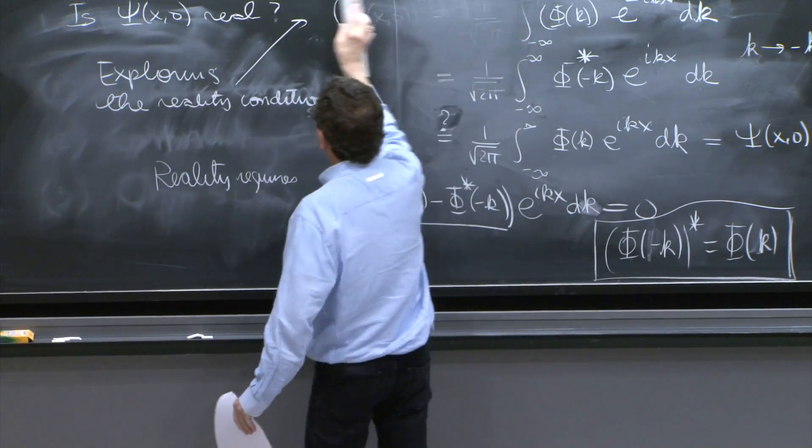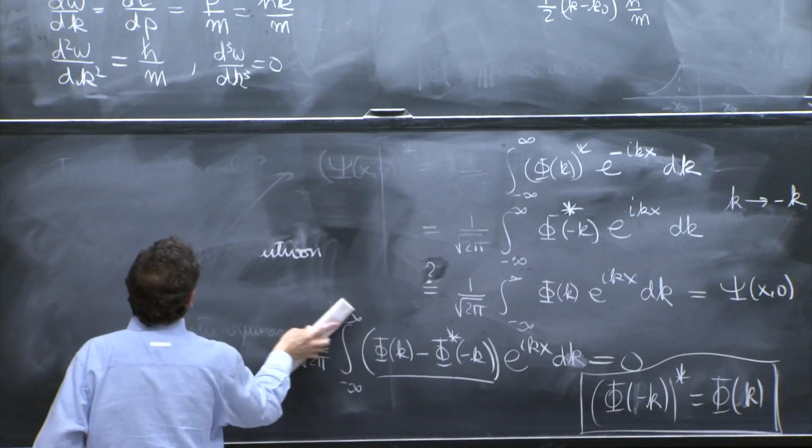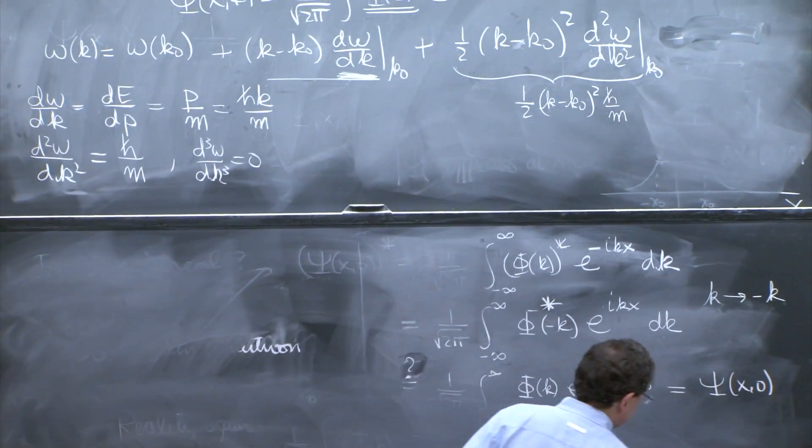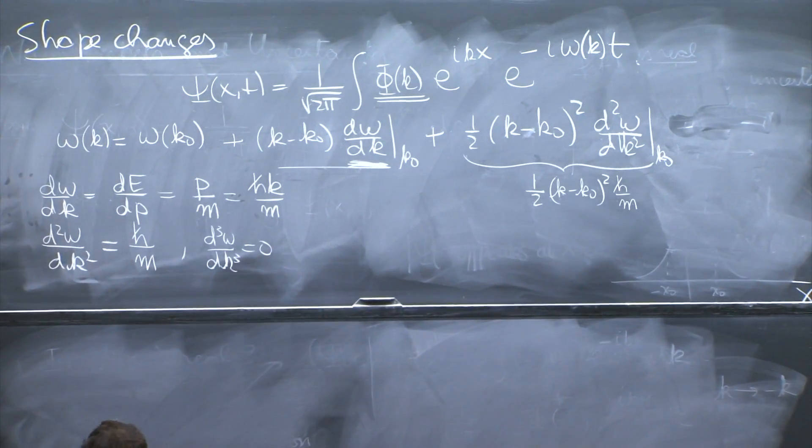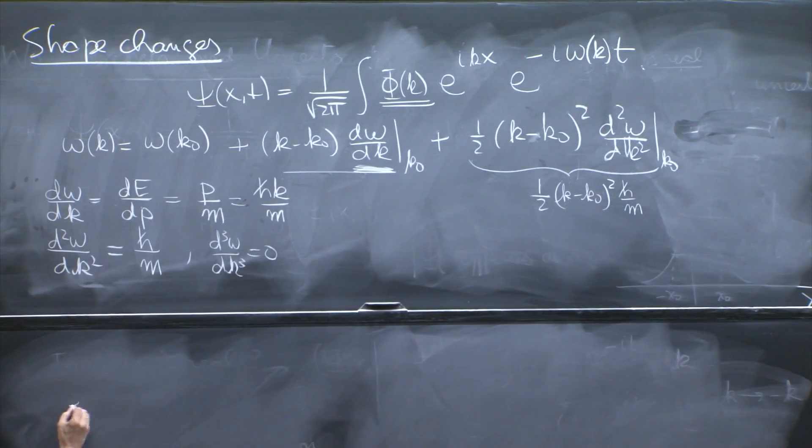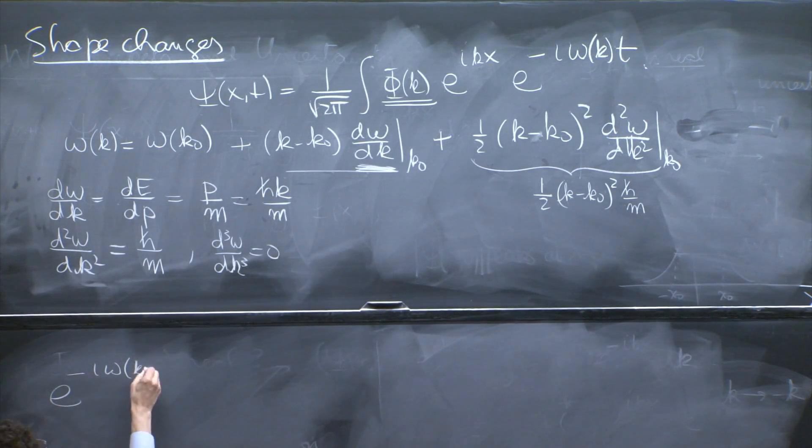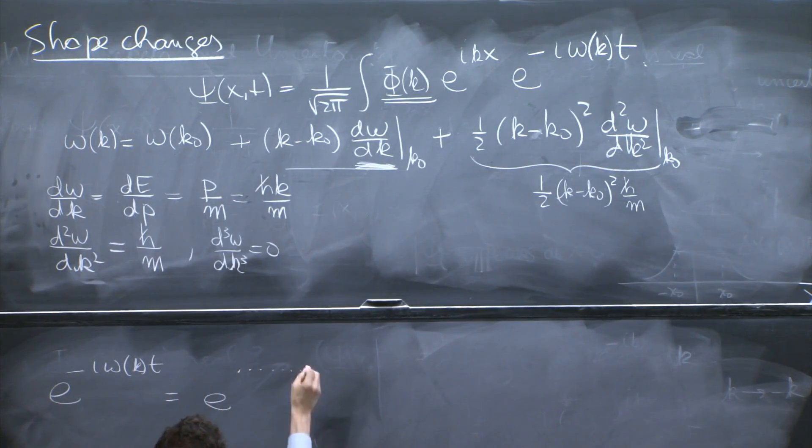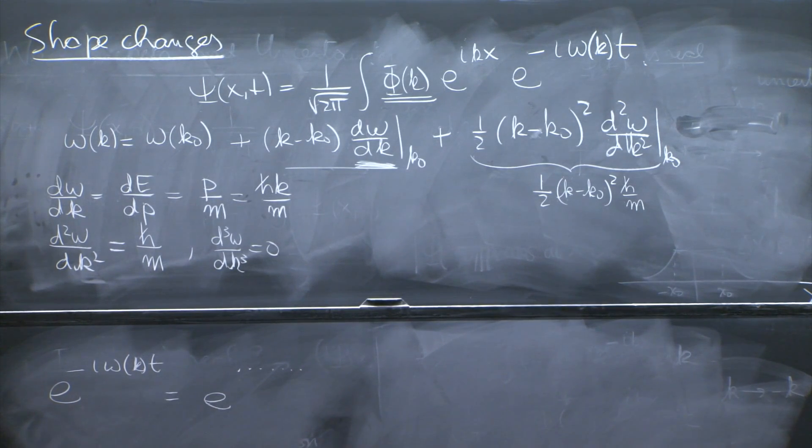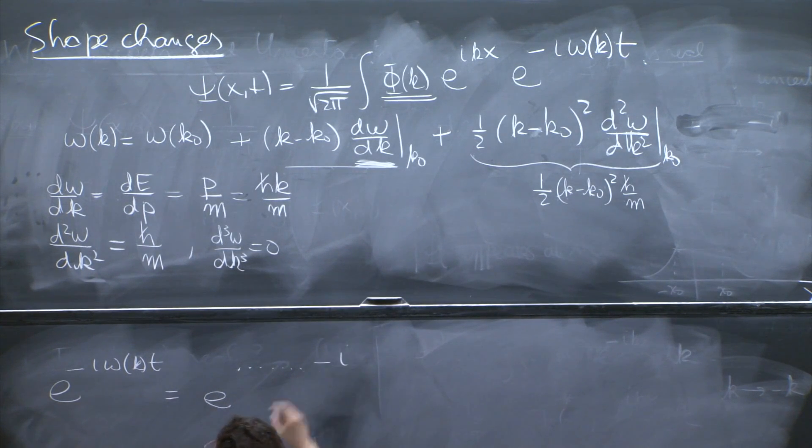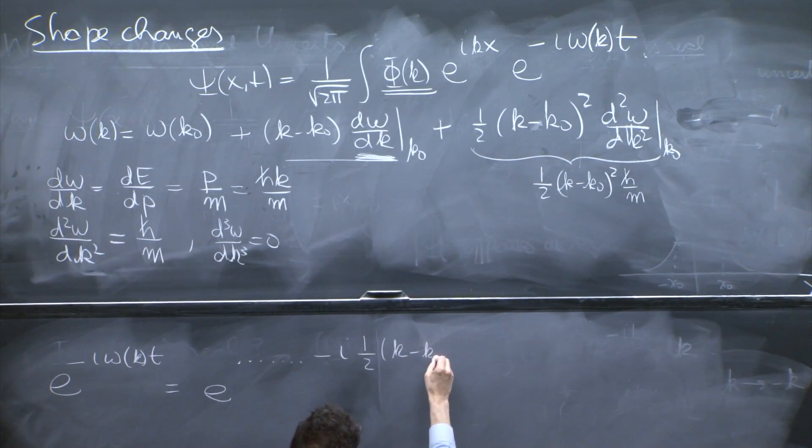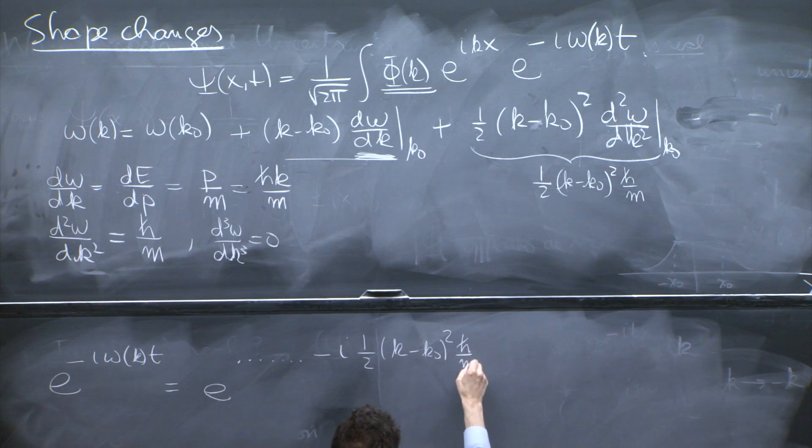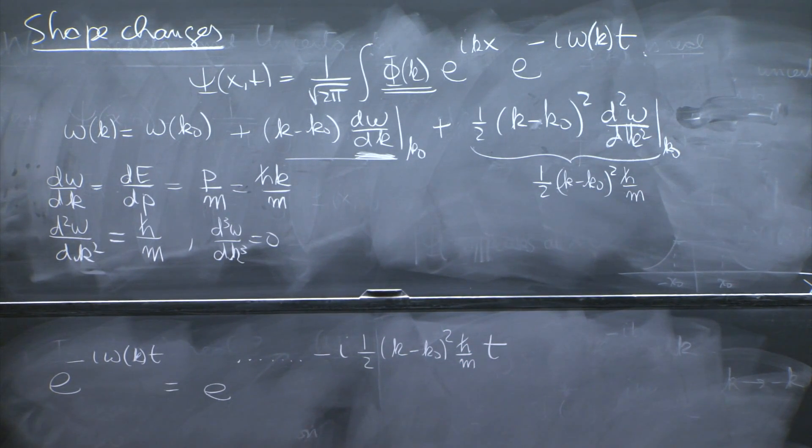This term is roughly then 1 half k minus k0 squared times h bar over m. We can go back to the integral that we're trying to do. We don't do it again, or not by any means, but just observe what's going on there. We have an e to the minus i omega of kt that we did take into account. But the term that we're dropping now is a term that is minus i omega of k, whatever we have here, 1 half k minus k0 squared h bar over mt. That's the phase that we ignored before.